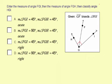Enter the measure for angle FGI, then the measure of angle FGH, then classify angle HGI. Given the information, ray GF bisects angle HGI. So ray GF bisects angle HGI.